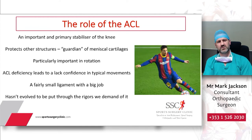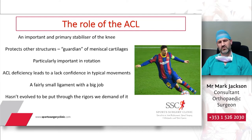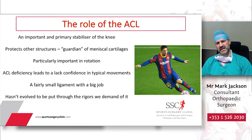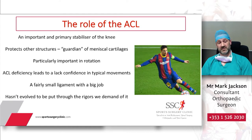So what does it actually do? It is an important primary stabiliser of the knee — that's the role of a ligament, to stabilise the joint. A good way to think of it is as a guardian of other structures too, in particular the important meniscal cartilages which are the big cushions and shock absorbers inside the joint. In rotation it becomes particularly important, as you might see Lionel Messi doing in a typical pivot and turn manoeuvre. If it's torn you've got an ACL deficient knee and that individual will often lack confidence in these movements. It's a fairly small ligament with a big job to do, and in humans it hasn't necessarily evolved for the demands we put it through. If you compare our cruciate ligament to an animal such as a mountain goat, you'll find the mountain goat has a far bigger, thicker ligament because of how it's evolved.